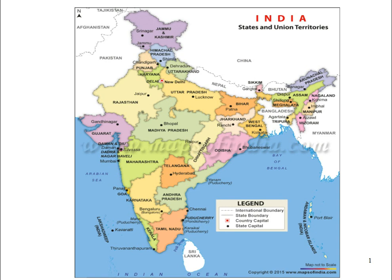The states range from Kashmir to Kerala and Gujarat to Arunachal Pradesh. Capital of Kerala is Thiruvananthapuram, capital of Tamil Nadu is Chennai, capital of Karnataka is Bangalore, capital of Andhra Pradesh is Amaravati (being built), capital of Telangana is Hyderabad — Telangana was recently formed by dividing Andhra Pradesh. Capital of Odisha is Bhubaneswar, capital of Chhattisgarh is Raipur, capital of Madhya Pradesh is Bhopal, capital of Maharashtra is Mumbai, capital of Gujarat is Gandhinagar.